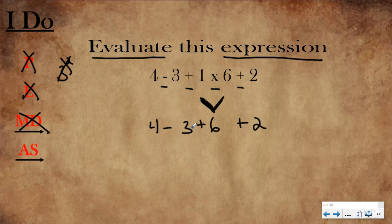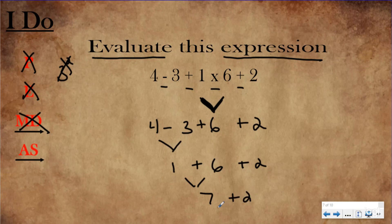Now I have subtraction, addition, and addition. I know all of those are equal because they're on the same step, so I just solve them from left to right. I do four minus three, which is one, plus six, plus two. Then still going left to right: seven plus two. My answer for this expression, when I evaluated it, is nine. If you don't follow those steps and do subtraction before the multiplication, you'll get a different answer. That's why they came up with the math convention called order of operations.